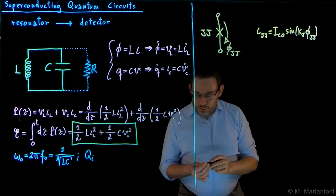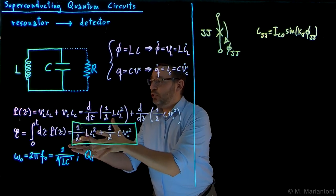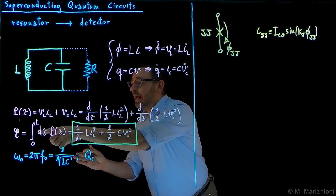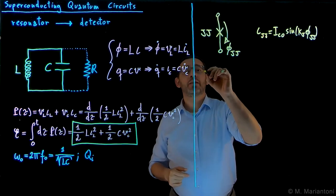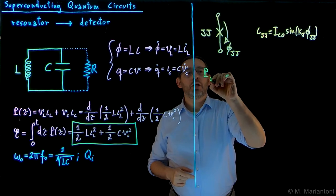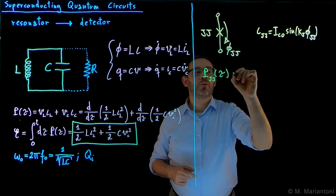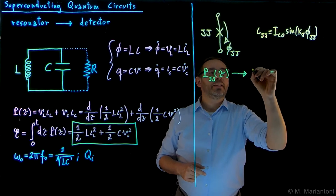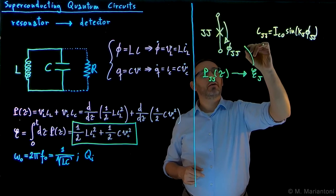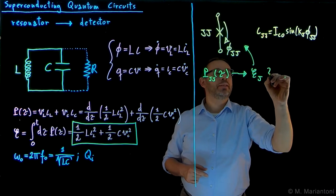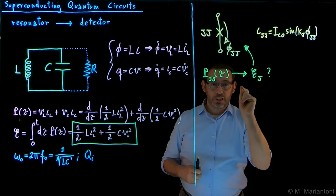Now, I want you to use our digital forum to discuss among yourselves how to use a similar procedure calculating first the power and then the energy by integration, which we use for the LC circuit, how to calculate first the power of a Josephson junction at a generic time tau, the instantaneous power, and then eventually the energy EJ, the Josephson energy, associated with a Josephson junction. This is the problem, the home assignment you will do on our digital platform.